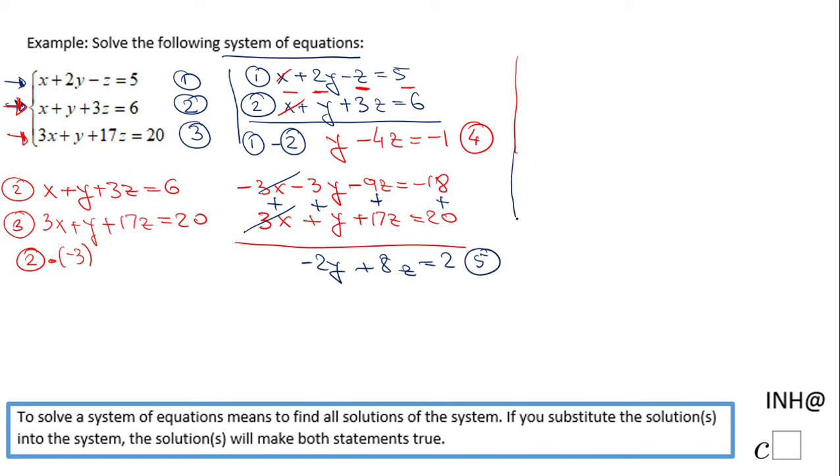I'm going to go with these two equations, number four and number five. You notice I have just y and z in them, and I'm gonna try to solve them. Equation number four says y - 4z = -1. Equation number five says -2y + 8z = 2. Let's say you want to eliminate y, so we're gonna multiply equation number four by 2.